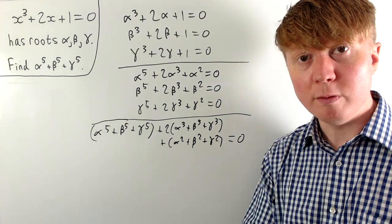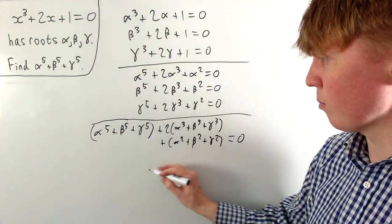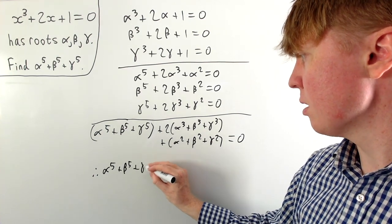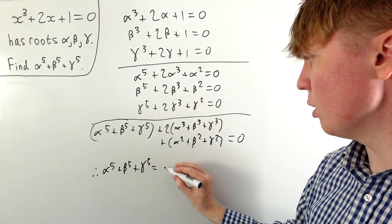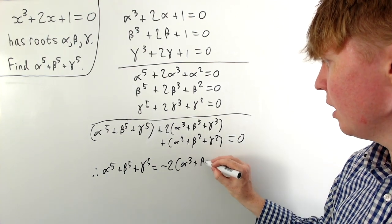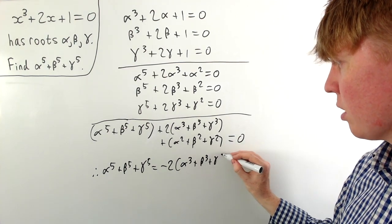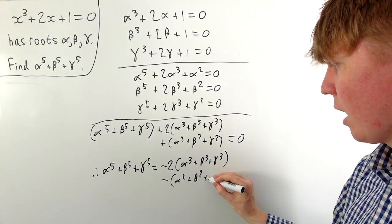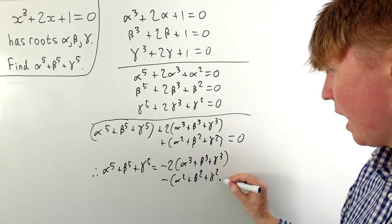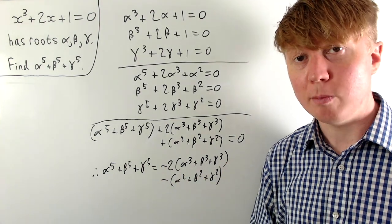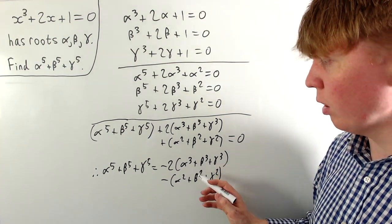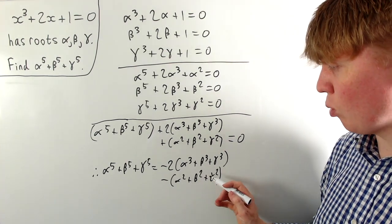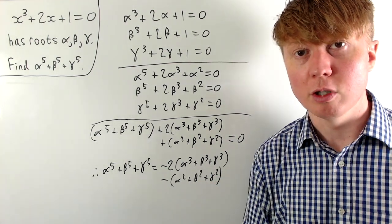Making the sum of fifth powers the subject by subtracting the other terms, we get: alpha to the five plus beta to the five plus gamma to the five equals negative two times the sum of cubes, minus the sum of squares. Now we need to find both the sum of squares and sum of cubes of our roots using Vieta's formulas.